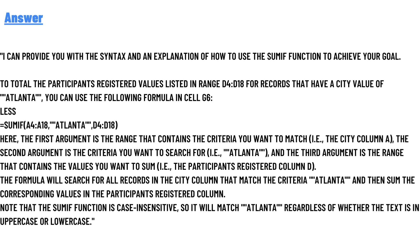To total the participant registrations values listed in range D4:D18 for records that have a city value of Atlanta, you can use the following formula in cell G6. The first argument is the range that contains the criteria you want to match, i.e., the city column A.